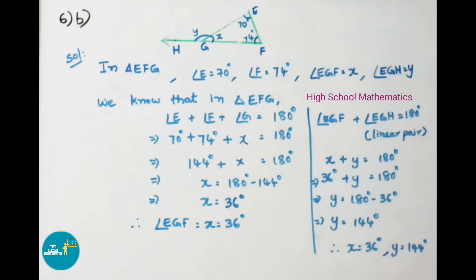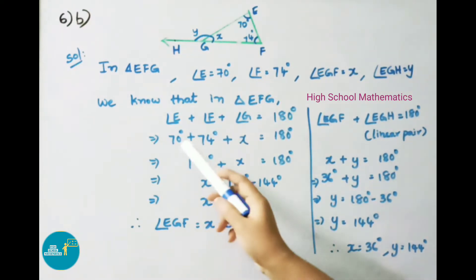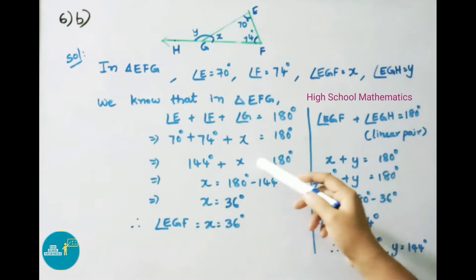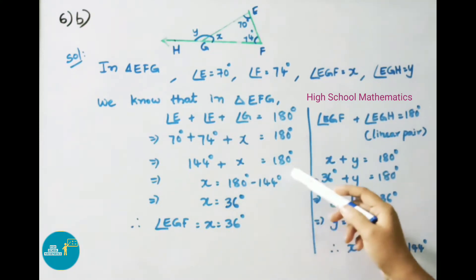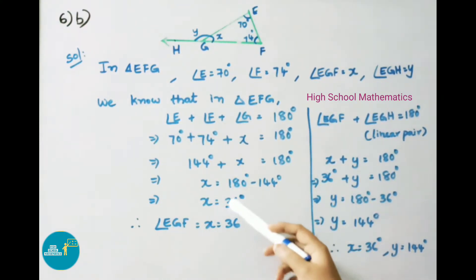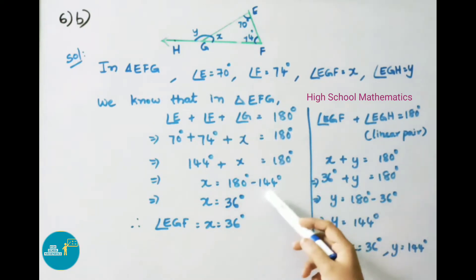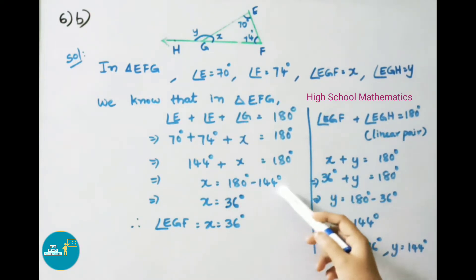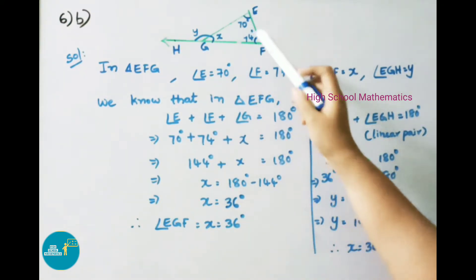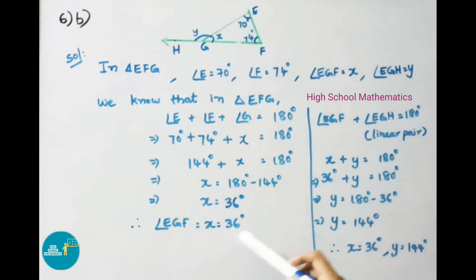In triangle PEG, the sum of interior angles equals 180 degrees. So angle E plus angle F plus angle EGF equals 180 degrees: 70 degrees plus 74 degrees, that is 144 degrees, plus x equals 180 degrees. Transposing, x equals 180 minus 144, so x equals 36 degrees. Therefore angle EGF equals 36 degrees.